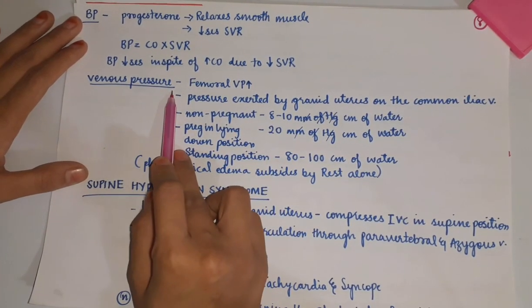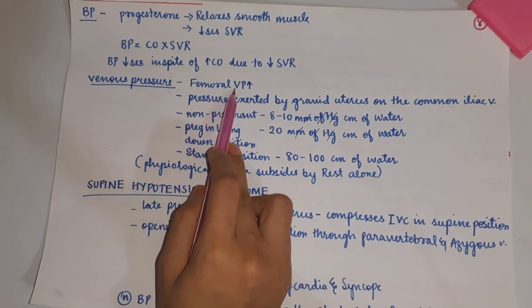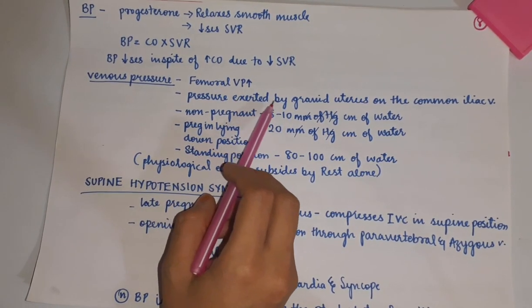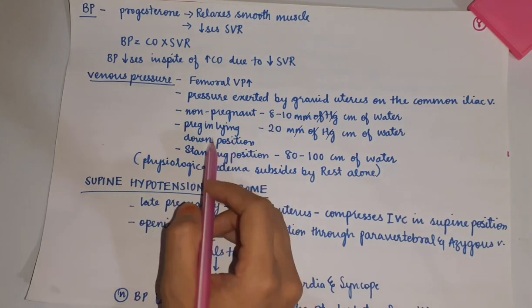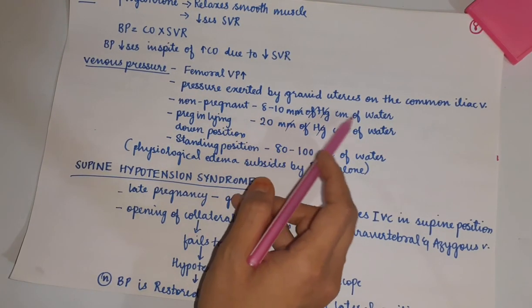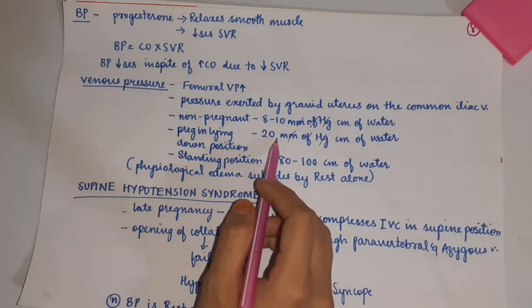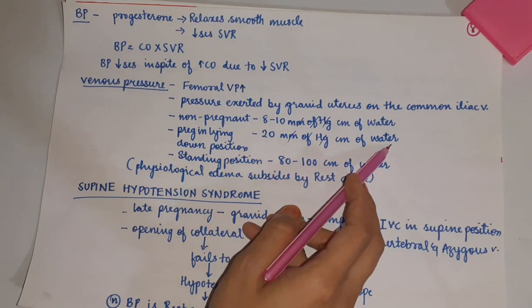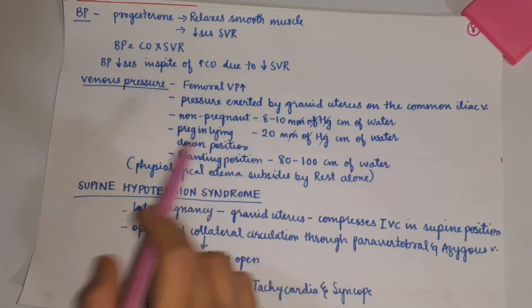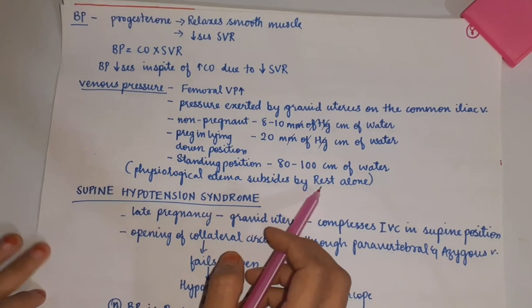Venous pressure: the venous pressure in the antecubital vein is normal, but the femoral venous pressure increases due to pressure exerted by the gravid uterus on the common iliac vein. In non-pregnant women, the pressure is 8–10 cm of water. In pregnant women, in the lying-down position it becomes 20 cm of water, and in the standing position it is 80–100 cm of water. This shows that physiological edema subsides by rest alone.